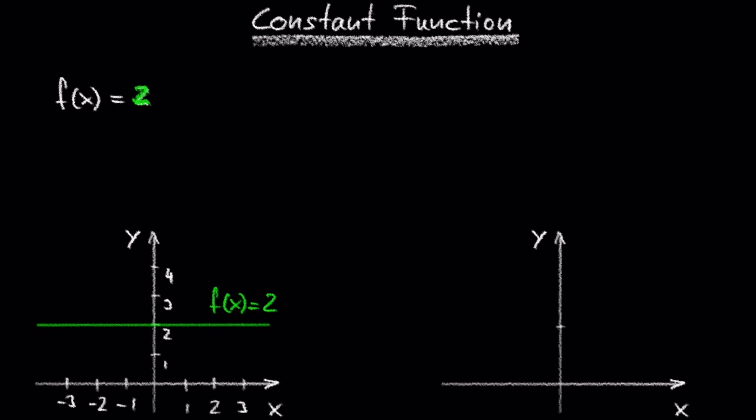In other words, there are no restrictions on the input. So we can write in interval notation that the domain goes from negative infinity to positive infinity. We use parentheses to represent negative and positive infinity in interval notation.